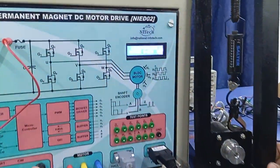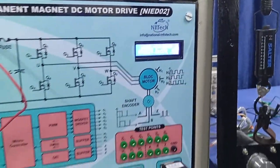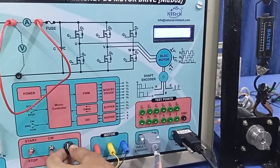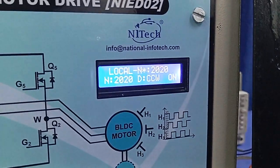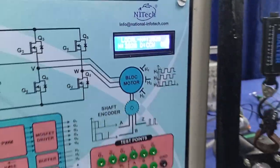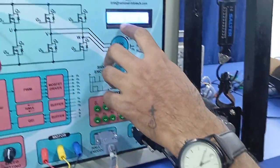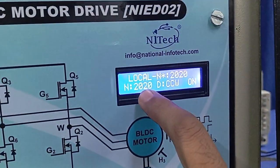Now let's increase the speed of the motor to 2000 rpm. I'm increasing the speed to 2020, and you can see the actual speed is also matching.